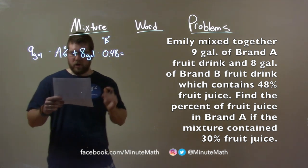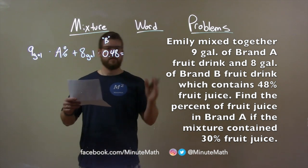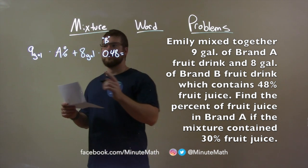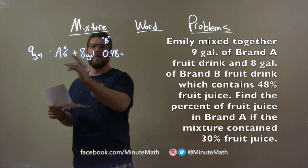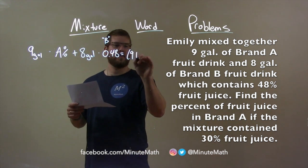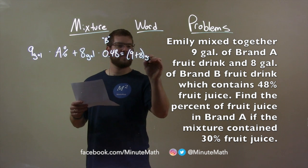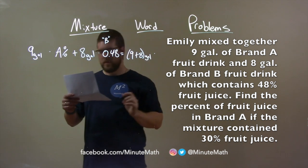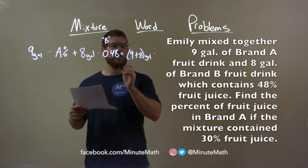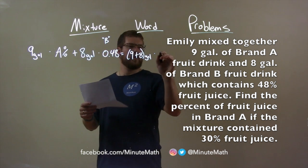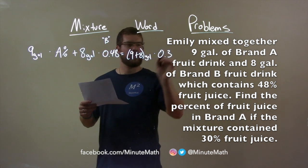Then, that's going to equal our total combination, which involves a total value of 9 plus 8 gallons. So, 9 plus 8 gallons times, they said, was a final thing of 30% fruit juice. So, 30% is a decimal, 0.3, okay?